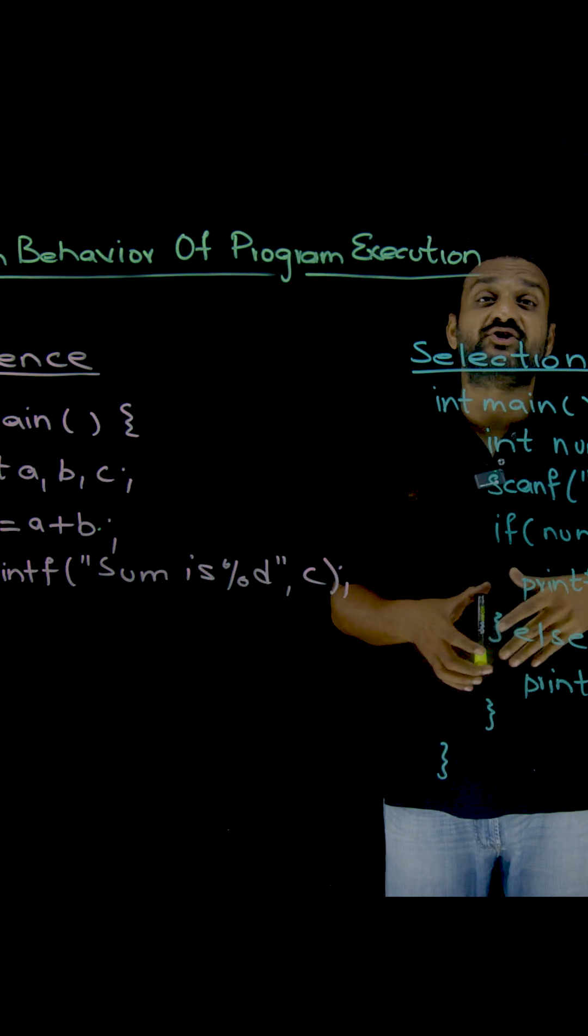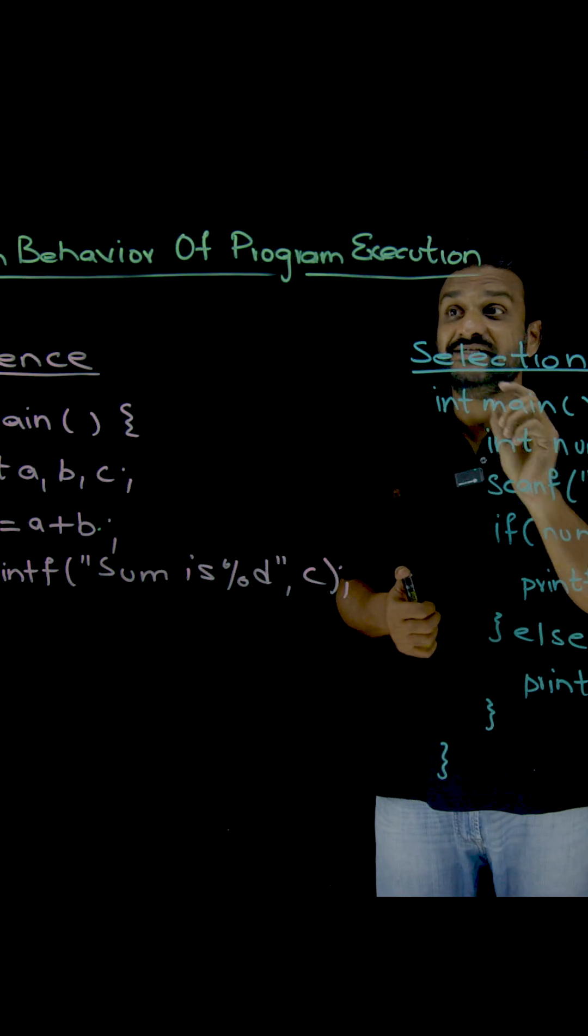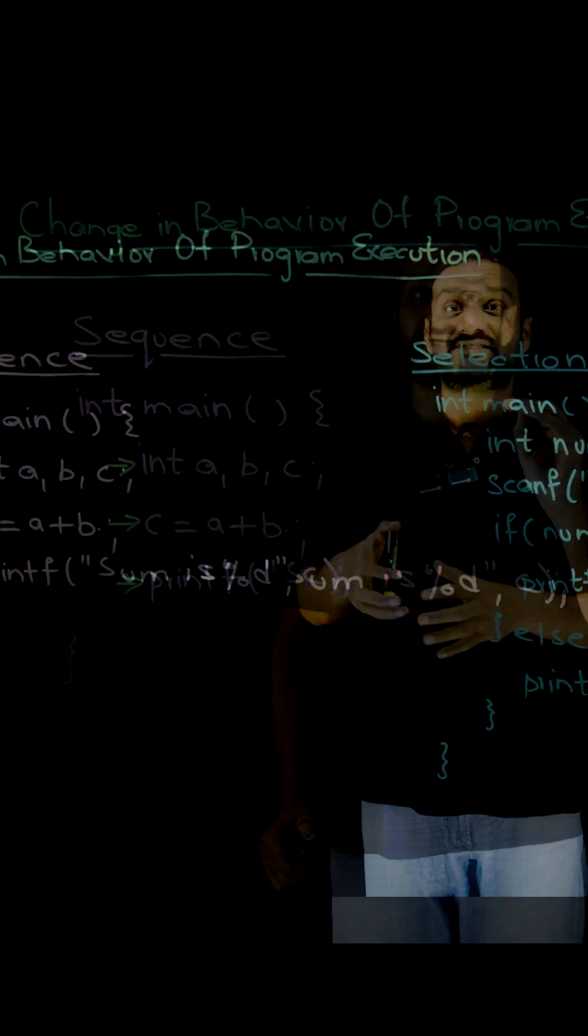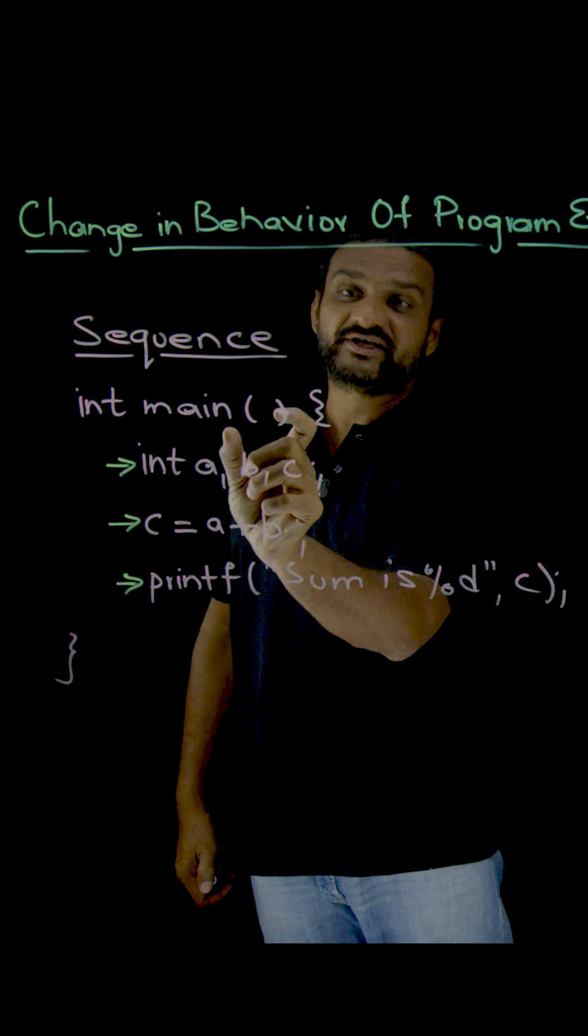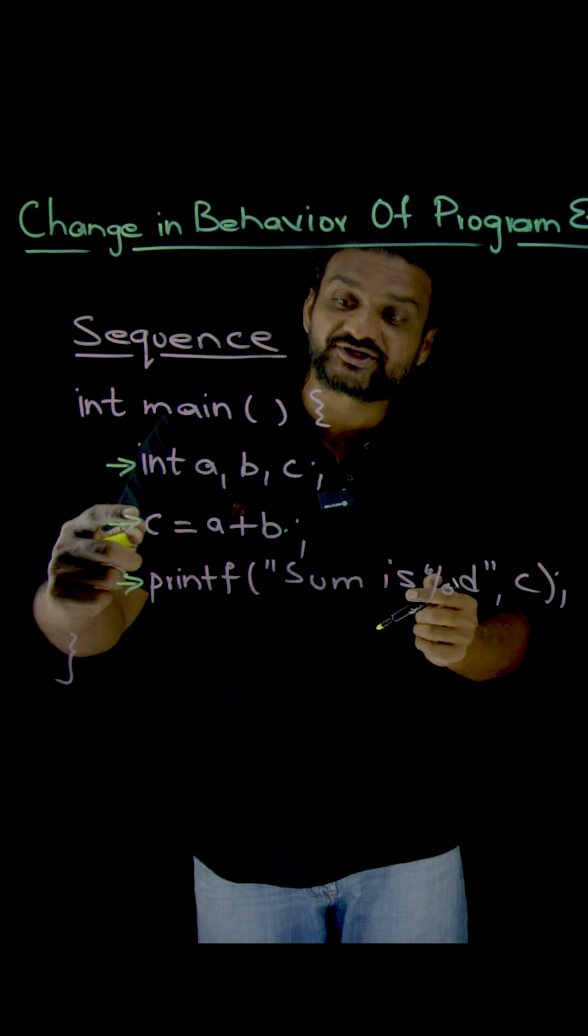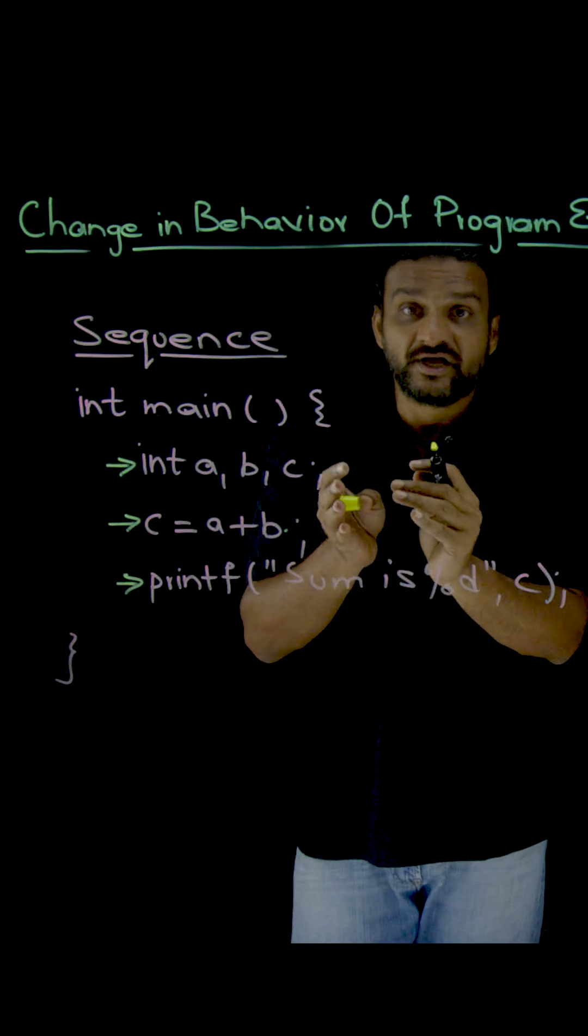In this class, we will understand one of the very important aspects of a programming language, which is change in behavior of program execution. First, the program is going to identify the main function. After identifying the main function, line by line, every line will get executed within this main function.